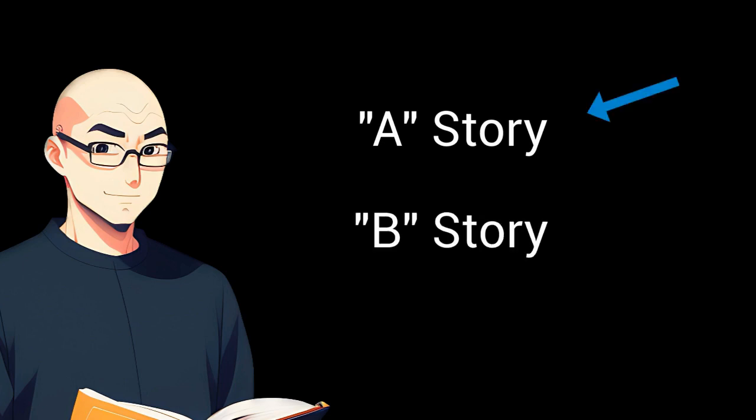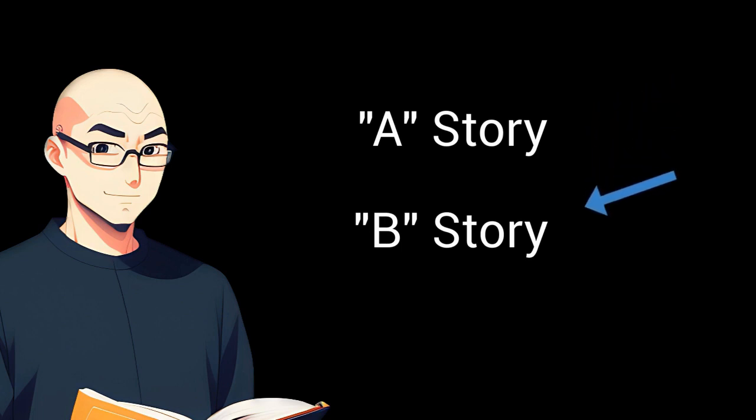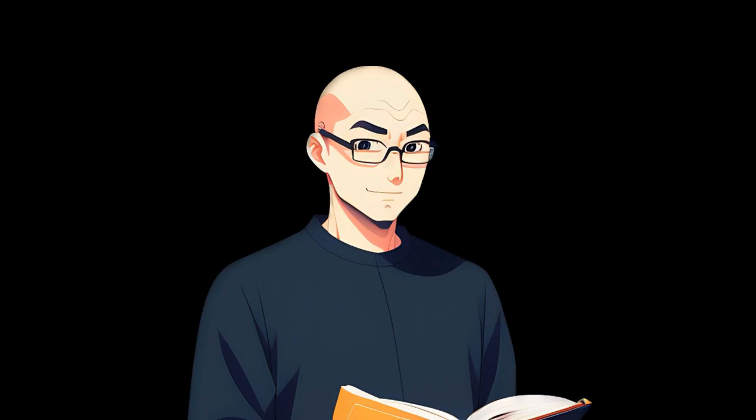It might seem like the A story is the actual story, but the truth is that your B story is what is really important. Stories, at their core, are about transformation — taking a flawed character and turning them into something new and improved. With that in mind, the theme of your story should be stated within the first 10% of your story.